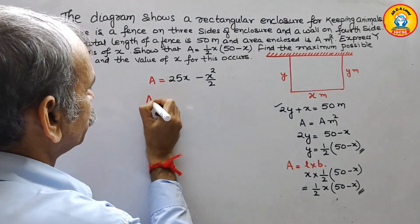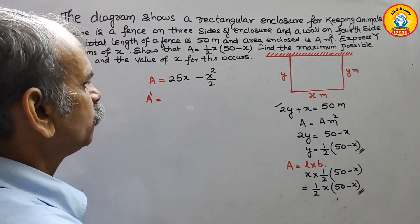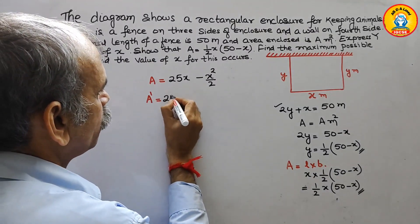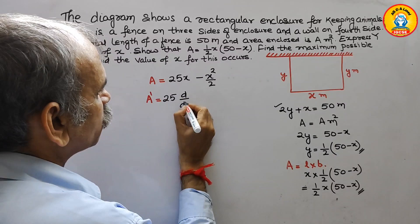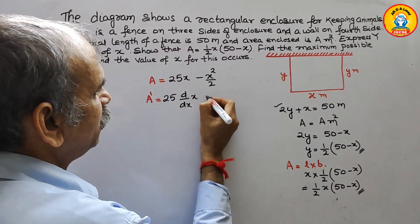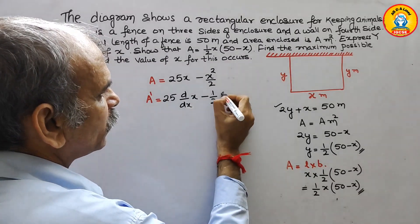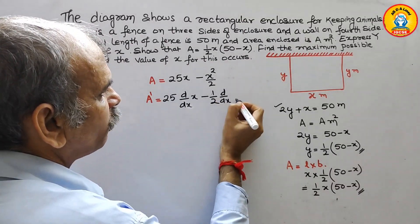So A dash, that is equal to what is that? 25, d by dx of x, minus 1 by 2, d by dx of x square.